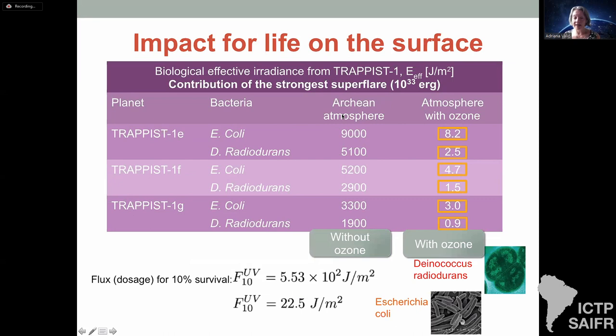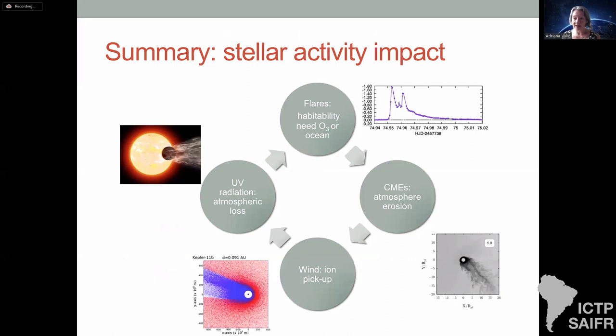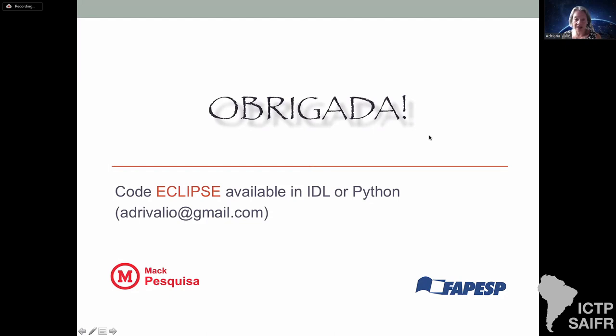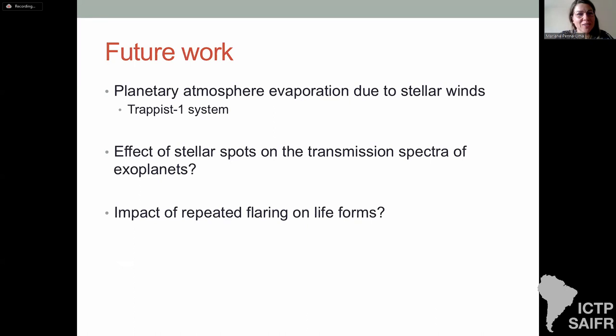In summary and conclusions, we can estimate the stellar activity impact from flares, corona mass ejections, winds, and ultraviolet radiation, and see how they impact planetary habitability. Future work includes: studying planetary atmosphere evaporation due to stellar winds; the effects of spots on transmission spectra of exoplanets, which is one of the goals of the James Webb Space Telescope; and the impact of repeating flares on life forms. Thank you very much.